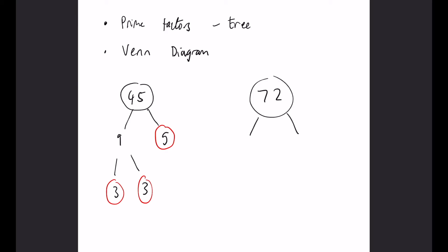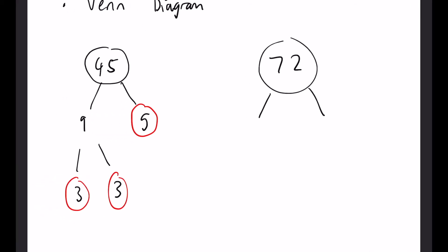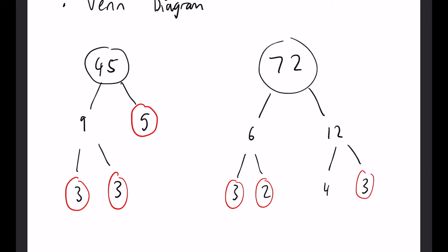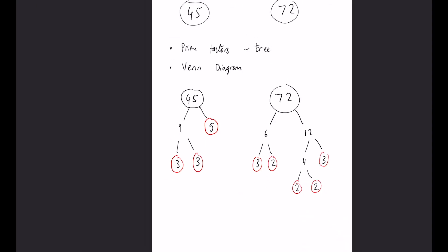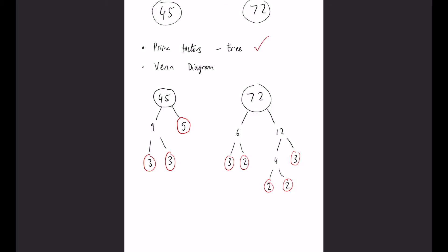Now for 72, which is a little harder. We split it into 6 and 12. Then 6 splits into 3 and 2, which are both prime. 12 splits into 4 and 3, and 3 is prime, but 4 goes down further into 2 and 2. So the prime factors of 72 are 2, 2, 2, 3, and 3. That completes both prime factor trees.